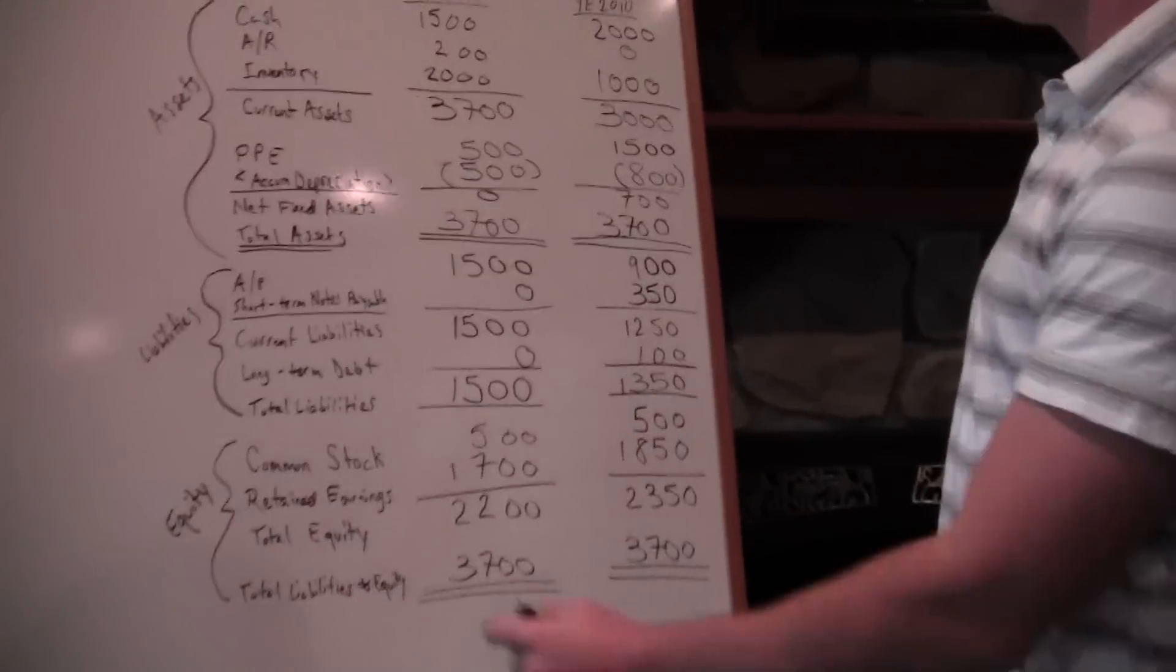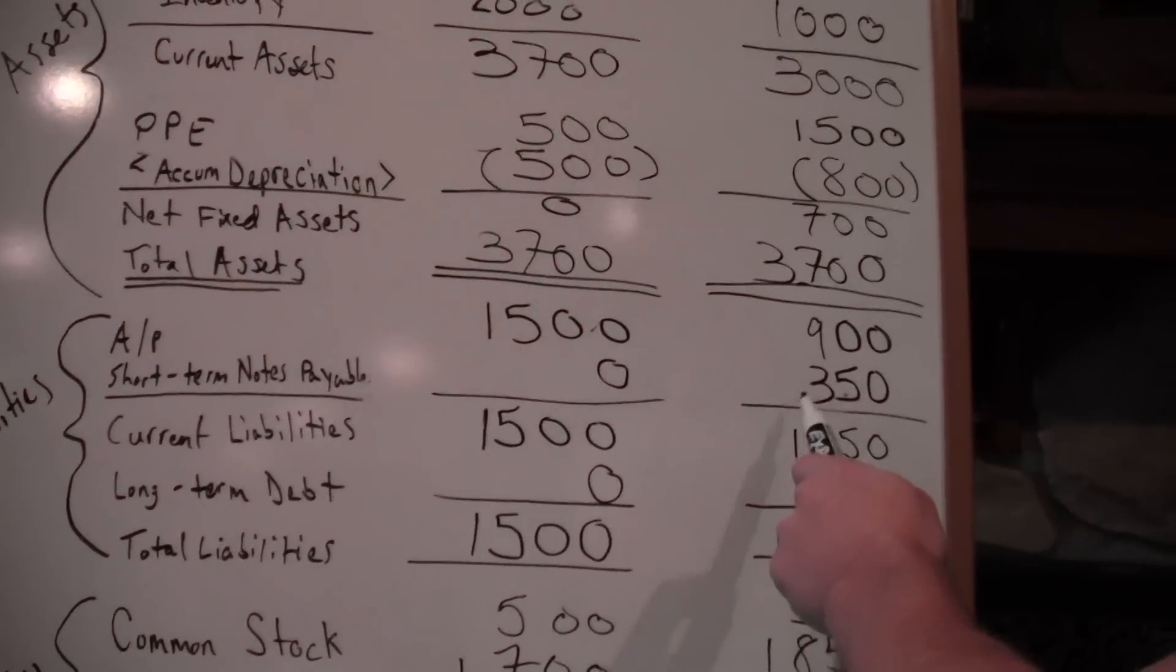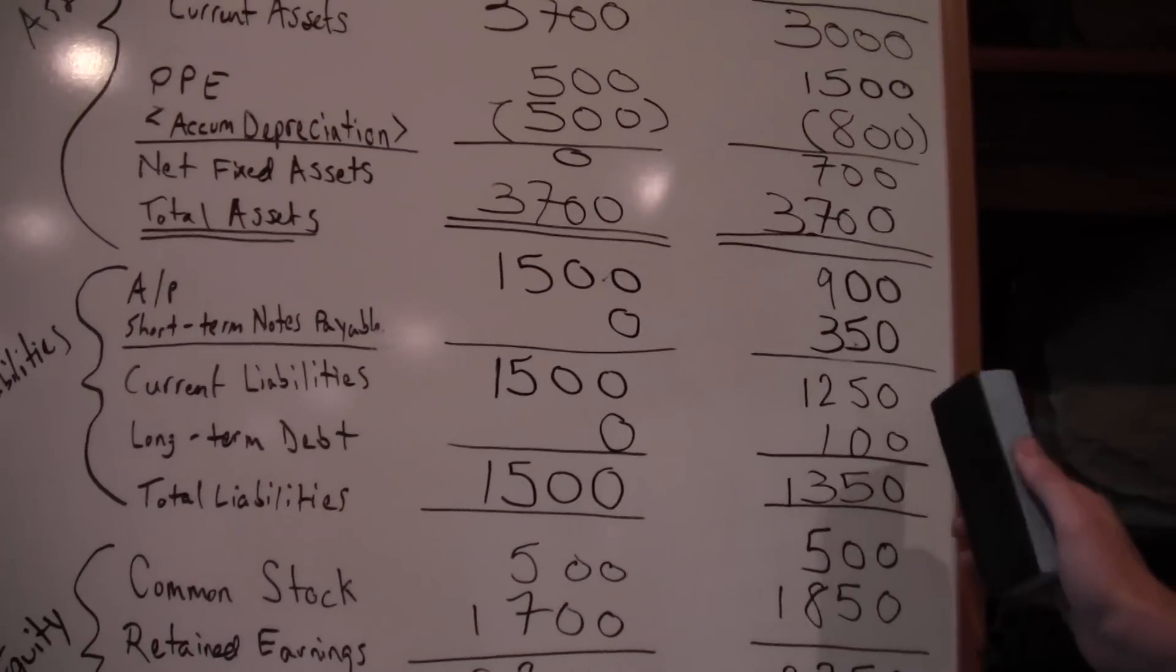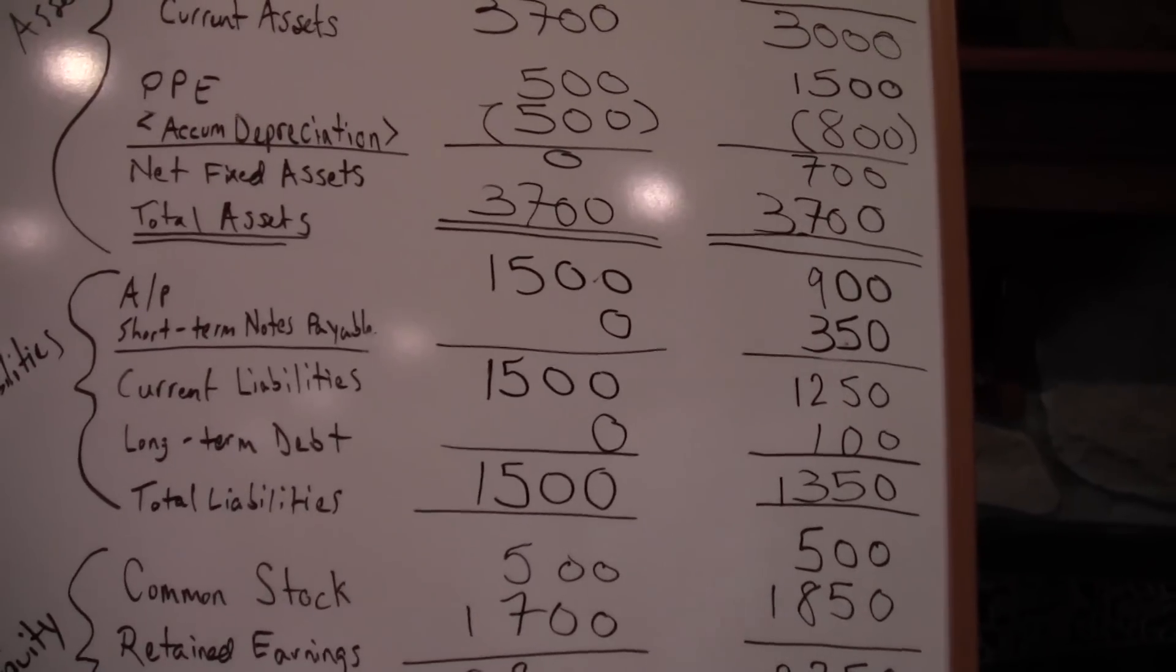We can see in 2010, we have short-term notes payable of $350, and we also have long-term debt of $100. So we actually have $450 in 2010 of interest-bearing debt.